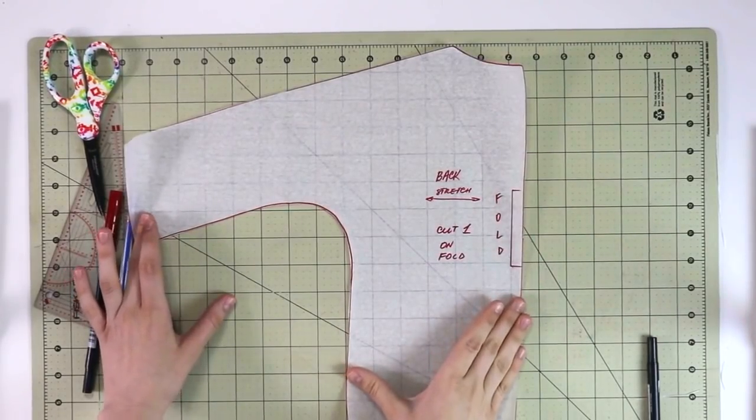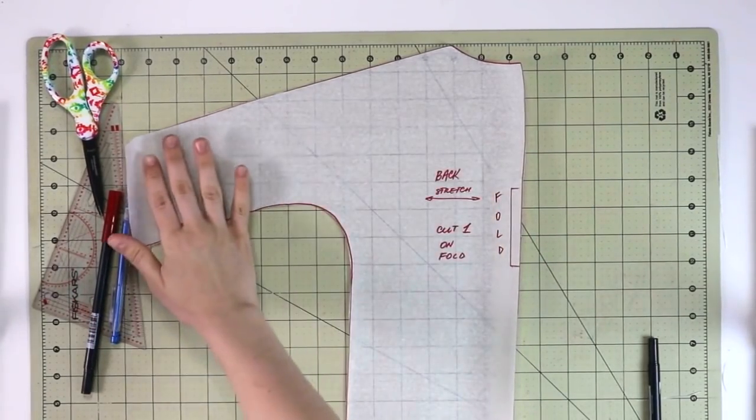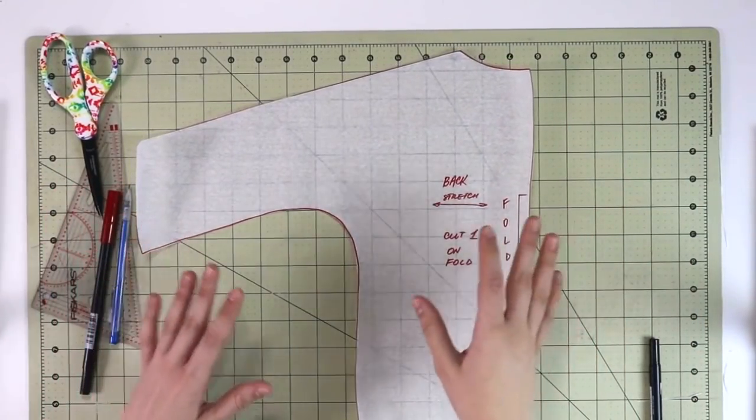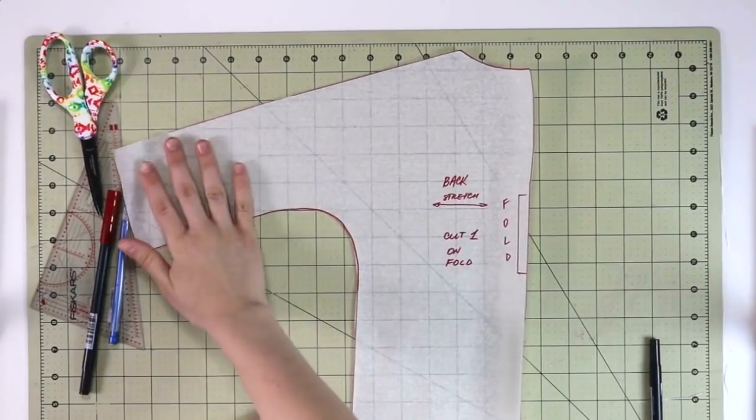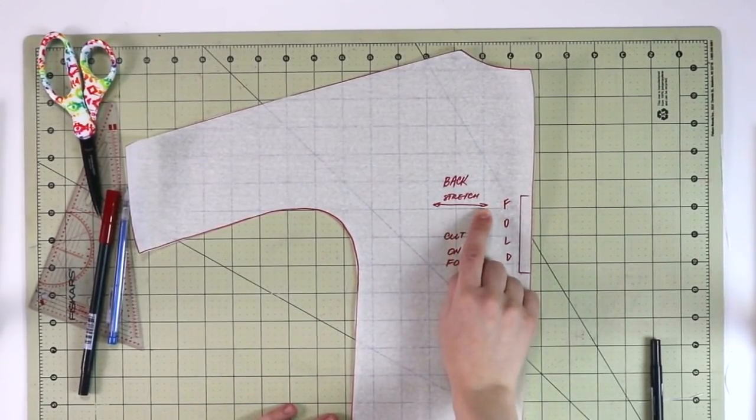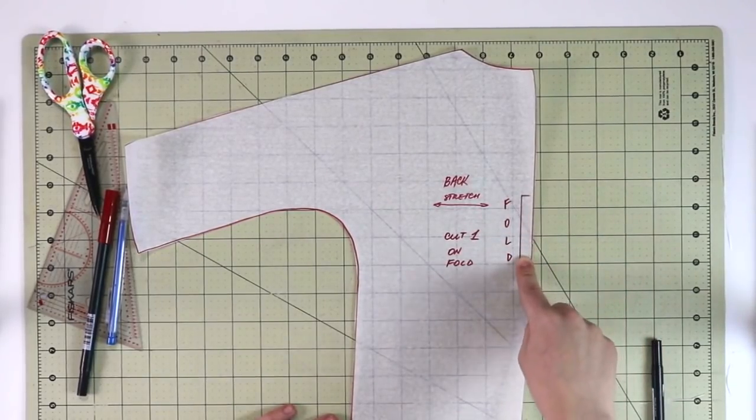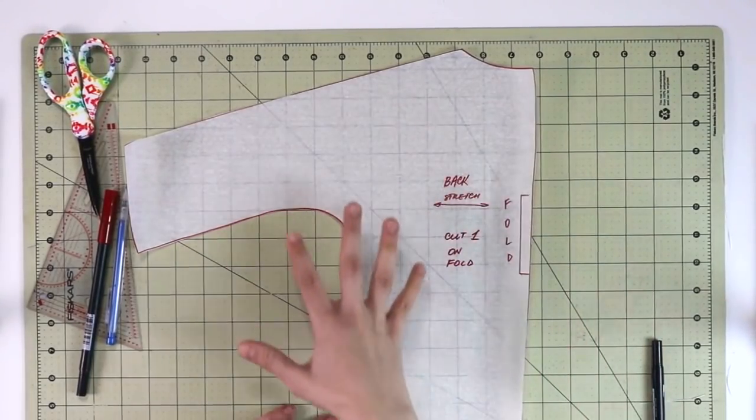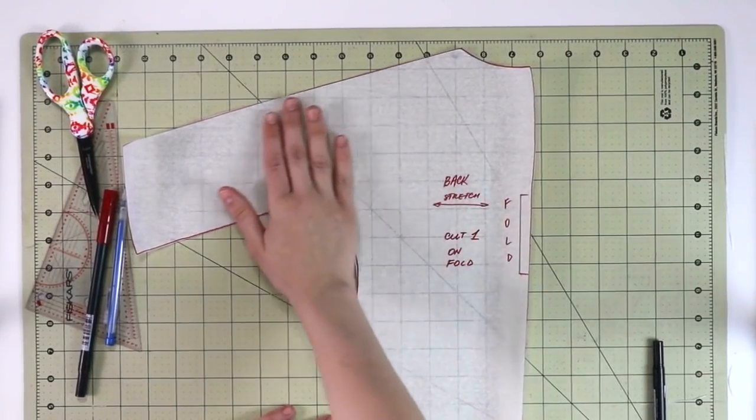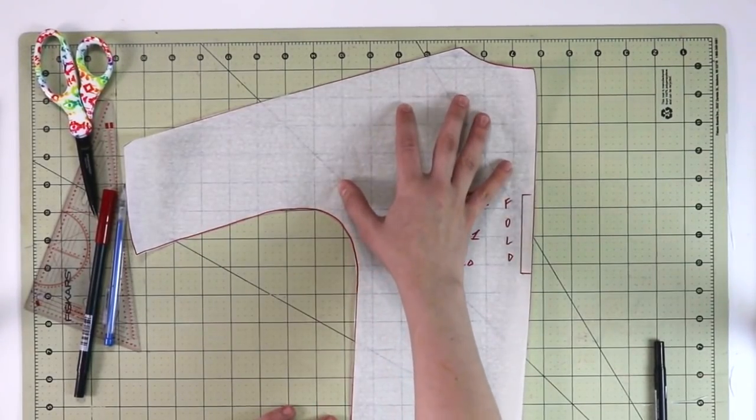First, let's go ahead and take another look at the pattern. Here I'm working with a smaller version for my toddler, so that way you can actually see everything on camera in one piece. Here's the pattern, the back pattern piece that we have drafted. We have marked the direction of the greatest stretch. We've marked that we will cut one on a fold. And here's the mark for the fold as well.